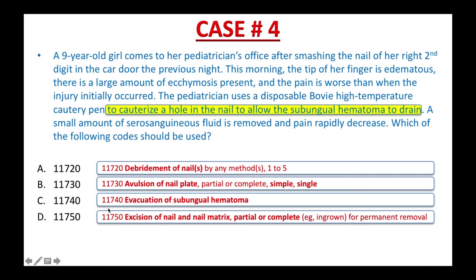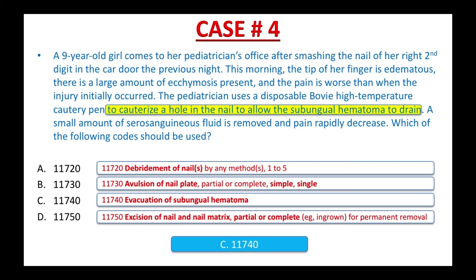If your answer is 11740 — evacuation of subungual hematoma — you are correct. Congratulations again, nothing can stop you now. 11740 is correct because the subungual hematoma was evacuated by using a cautery pen to cauterize a hole in the nail to allow it to drain. 11720, 11730, and 11750 are not correct because no debridement, no avulsion, and no excision were done on the nail. The correct answer is C, 11740.